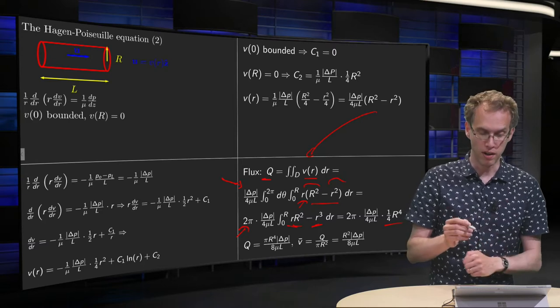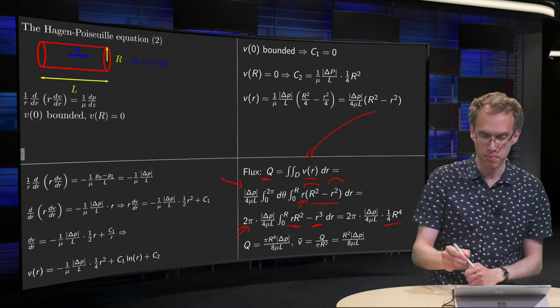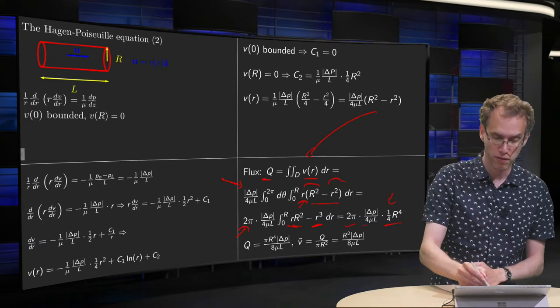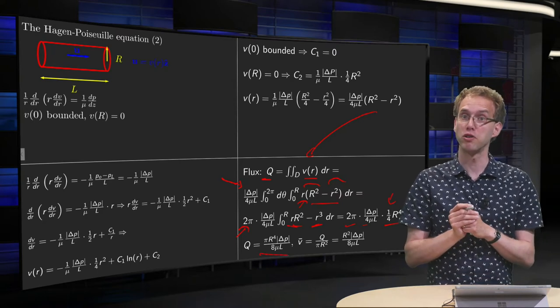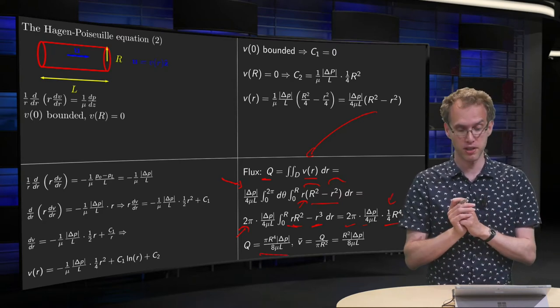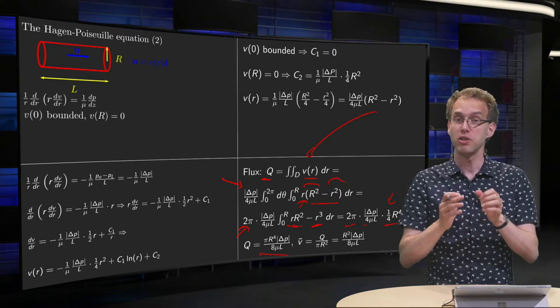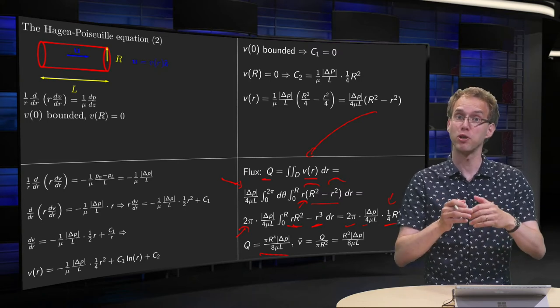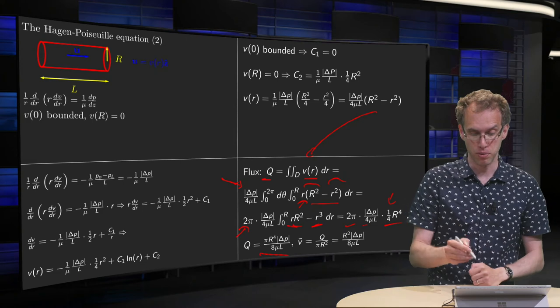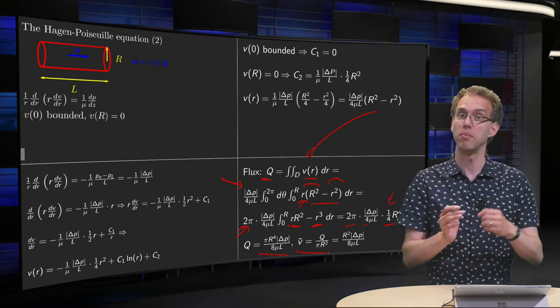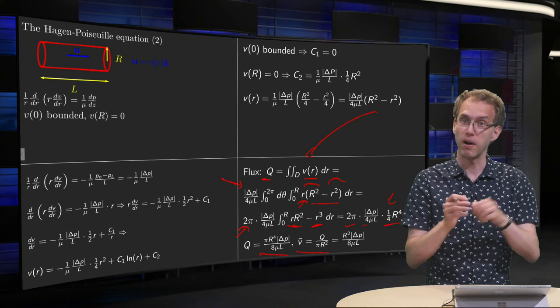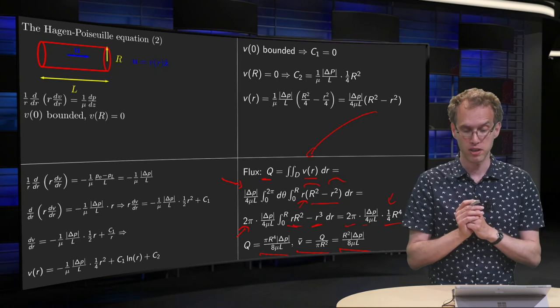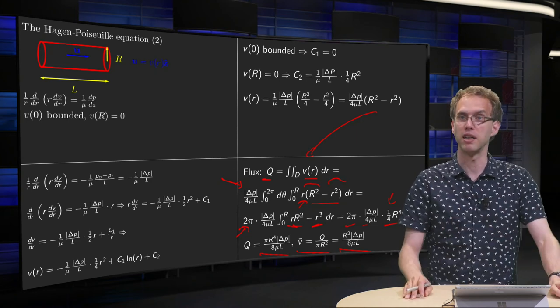So, what do we have then, if you clean up some of the mess here, the 2 pi, the 4, and the 1 over 4, you have that your flux is proportional to R to the power 4, and then some proportionality constants. So you see, actually, because your area is proportional to R squared, that your flux is proportional to the area squared. You can, for example, also compute the average velocity now, by dividing Q by pi R squared. And you see that this expression is equal to R squared times pressure difference divided by 8 times mu times L.